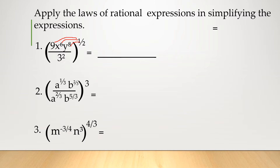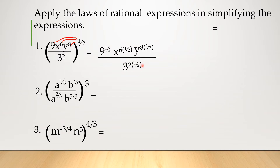So what you are going to do is: you have 9 raised to 1 half, then x — we have 6 here, so that 6 will be multiplied by 1 half. In 9, there is 1. So now, multiply all the exponents inside by the exponent outside. And then for y, raised to 8 times 1 half. For the denominator, you have 3 squared times 1 half — the exponent 2. And then you can now simplify this.